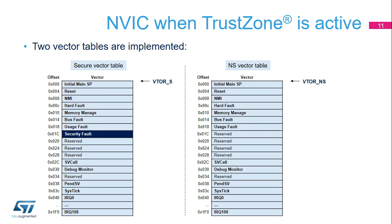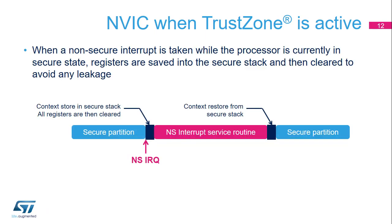The non-secure kernel and secure kernel have separate vector tables. The vector table contains the addresses of all the exception handlers. The Vector Table Offset Register (VTOR) that contains the base address of the vector table is banked, one per security level. General-purpose registers are not banked. Therefore, their contents shall be cleared on any transition from secure to non-secure to avoid that secure information present in these registers is accessible from the non-secure partition. When a non-secure interrupt occurs while a secure partition is active, the contents of all general-purpose registers are automatically saved into the secure stack and then the microcode writes 0 to these registers.